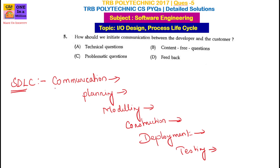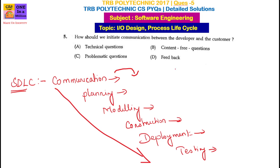In the software development lifecycle, there are some phases. So, if we develop the software, we will first communicate with our customers. We can also communicate between the developer and the customer. When they communicate with the software, that is communication.